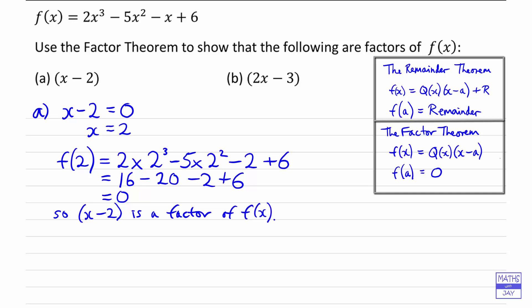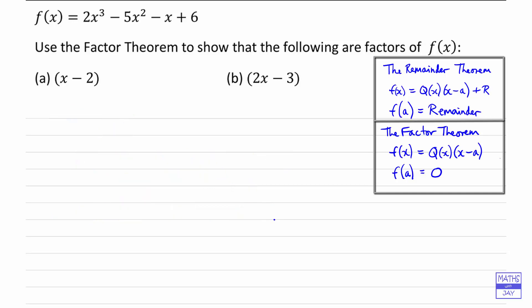That was straightforward because we just had one x in our factor. In part b we've got 2x, so a little bit more thought needed. Let's just clear this. In part b we need to put 2x minus 3 equal to zero.